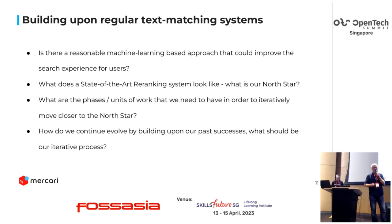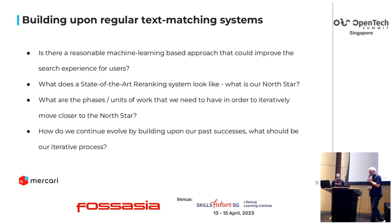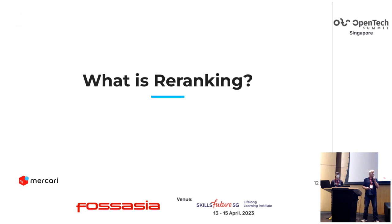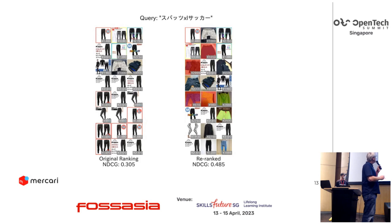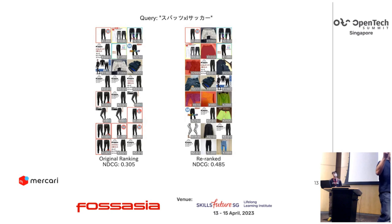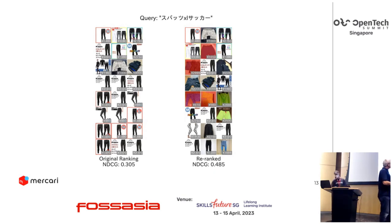I'll talk about what re-ranking is shortly. Also, how we can improve over time — this is not a process that is done once and finished. So what is re-ranking? In a simple image, you have a search result — searching for sports, like training trousers in Japanese. What you actually want is that the more relevant items, the ones that have a higher probability to be sold, are higher up in the list. If an item that could be bought by a user is on the sixth search page, they will probably not find it. So it's better to move them up. This is what re-ranking does.